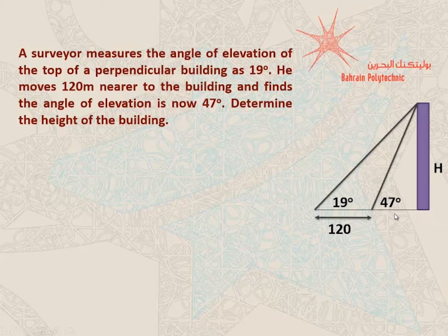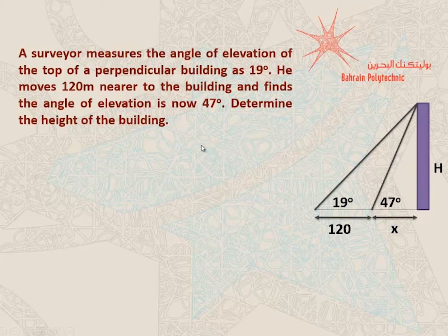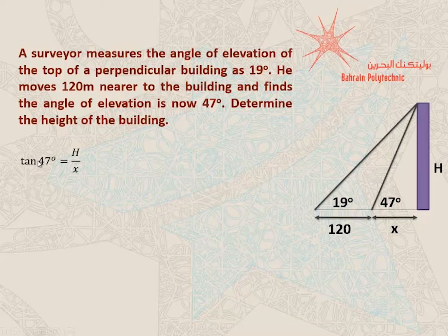I'm going to label the closer horizontal distance x. In this figure, we've got two right angle triangles — a small one and a bigger one. I'm going to start with the smaller one to figure out the value of x first, and then use it to figure out the value of h. For the smaller triangle, I can express the relationship between the opposite h and the adjacent x using the tan function. So tan of 47 degrees is equal to the opposite h over the adjacent x.